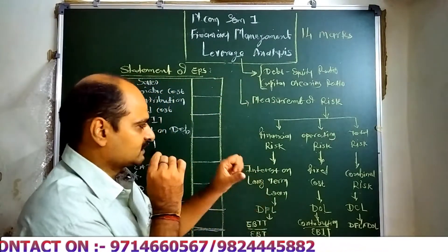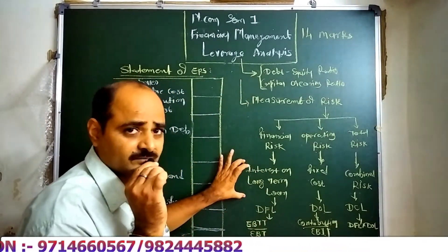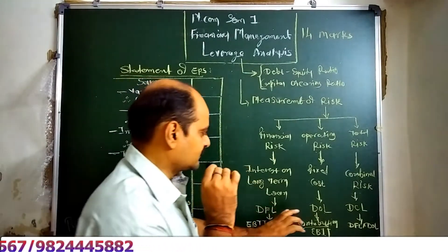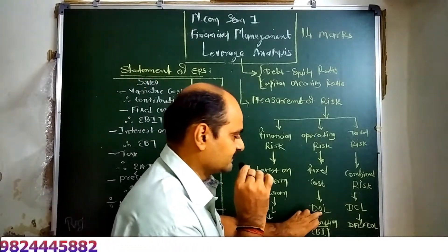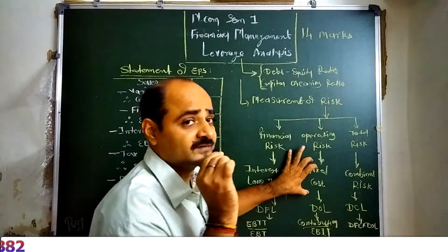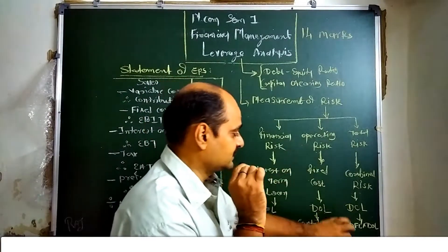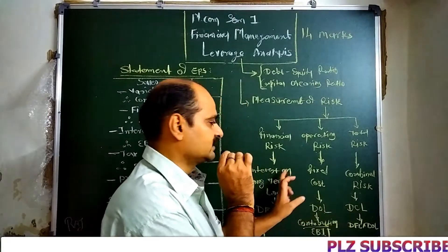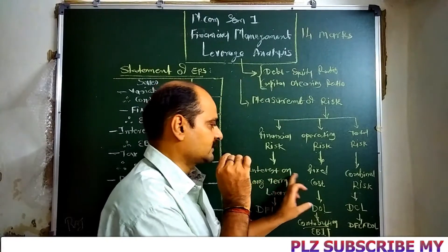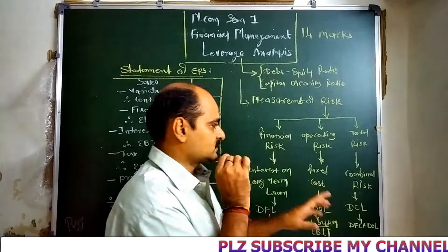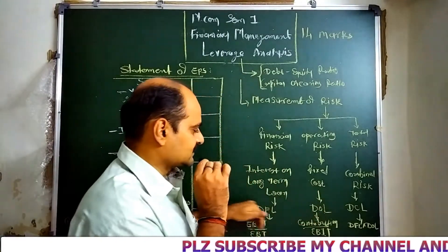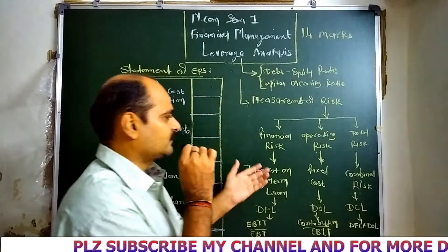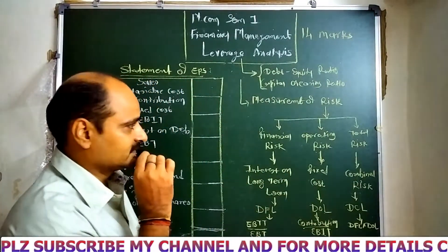DFL shows the risk regarding interest on long-term loan or fixed financial expenses. Degree of Operating Leverage shows the risk regarding fixed cost, and Degree of Combined Leverage shows the risk regarding both interest on loan and fixed cost. These are the three formulas we will use to find out the different types of leverages.